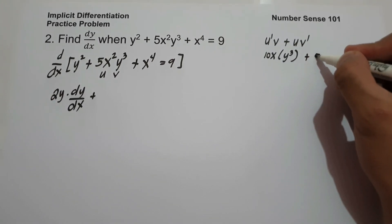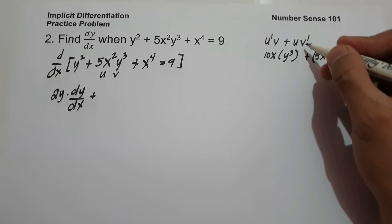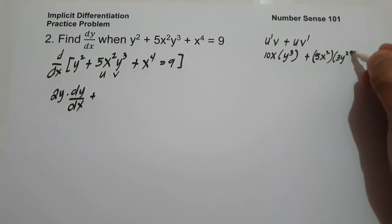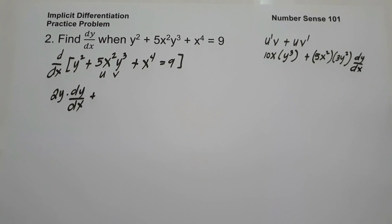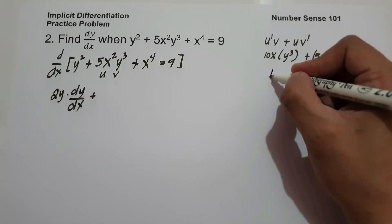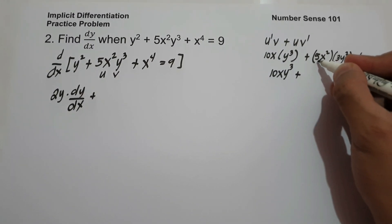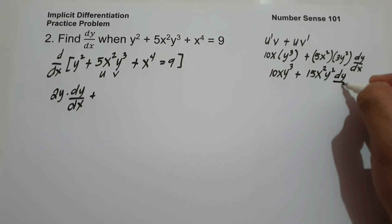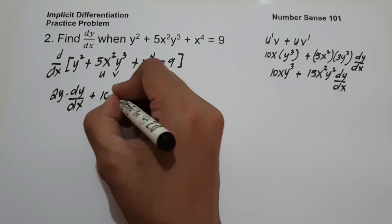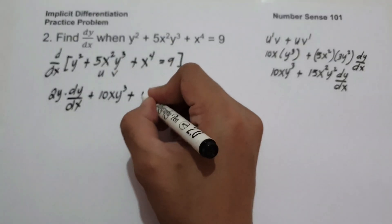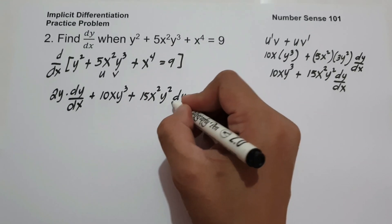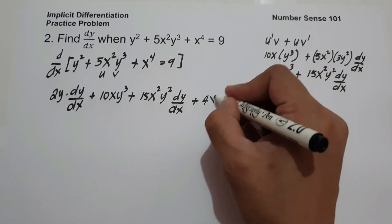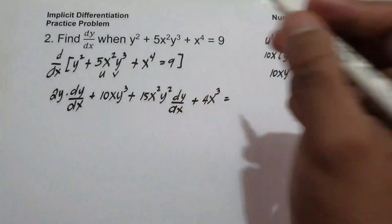And v prime, the derivative of y cubed, is 3y squared. Since we have a y variable, it is associated with dy over dx. So simplifying: 10x times y cubed plus 5 times 3 equals 15, giving us 15x squared y squared dy over dx. And the derivative of x raised to 4 is 4x cubed, and the derivative of 9 is 0.